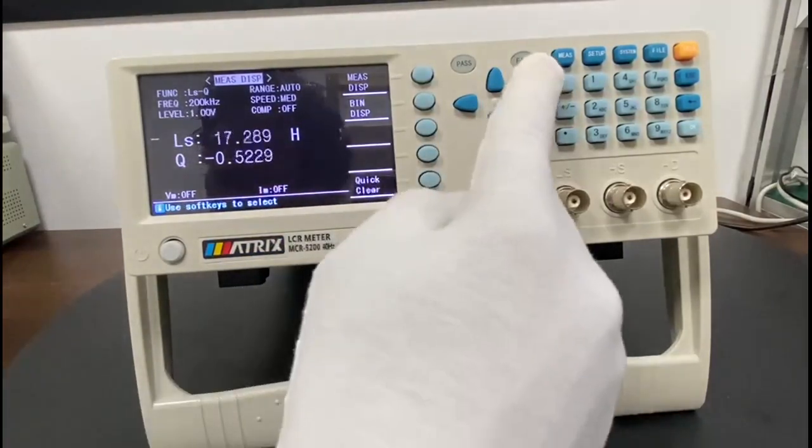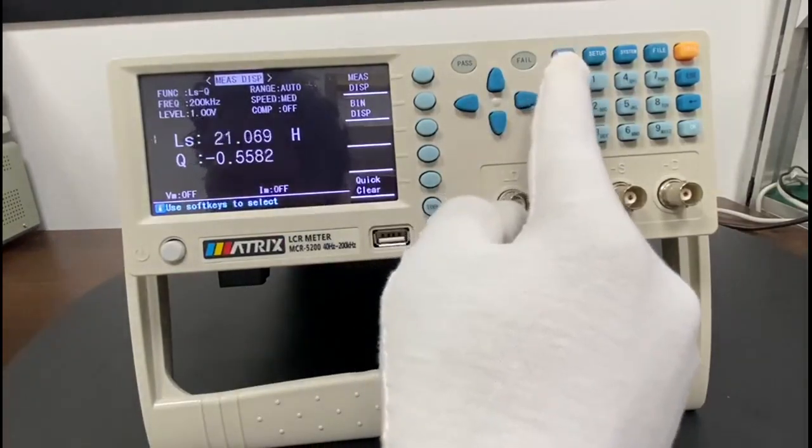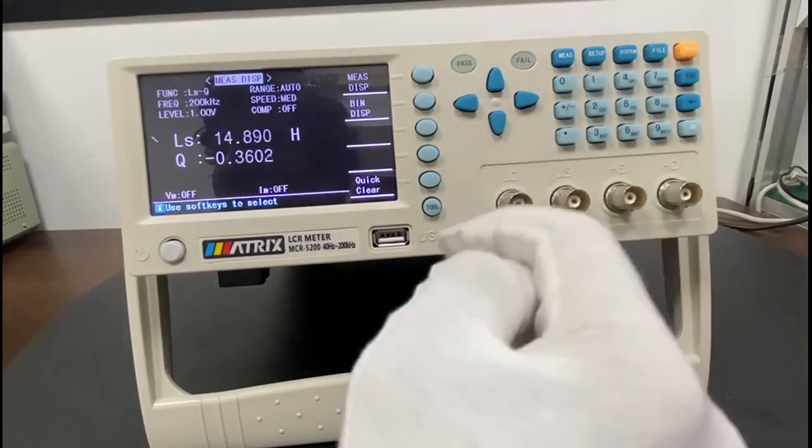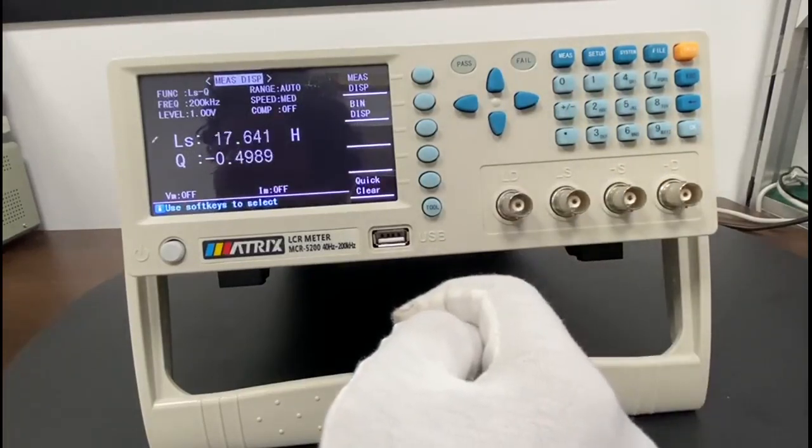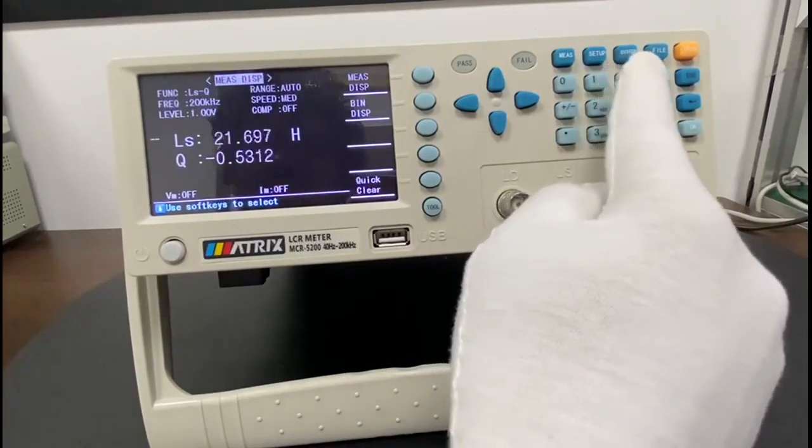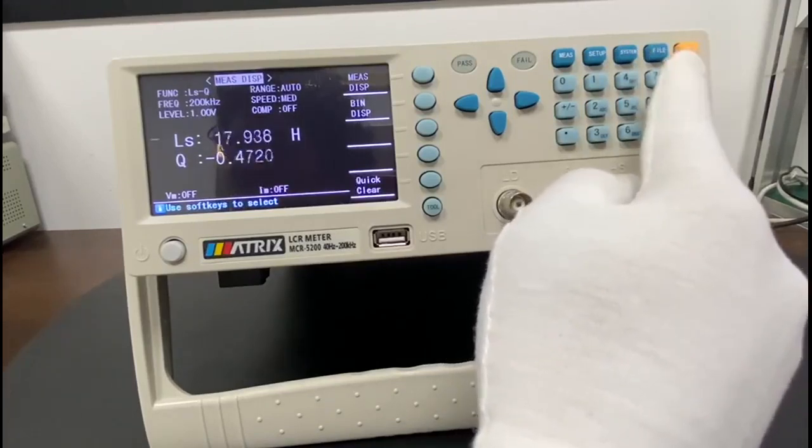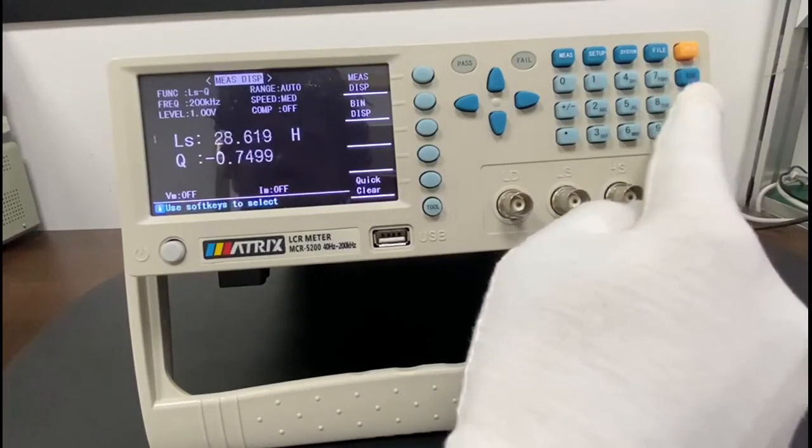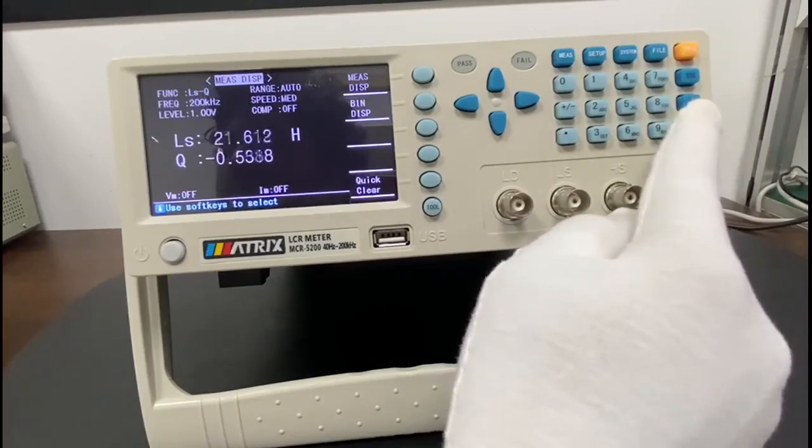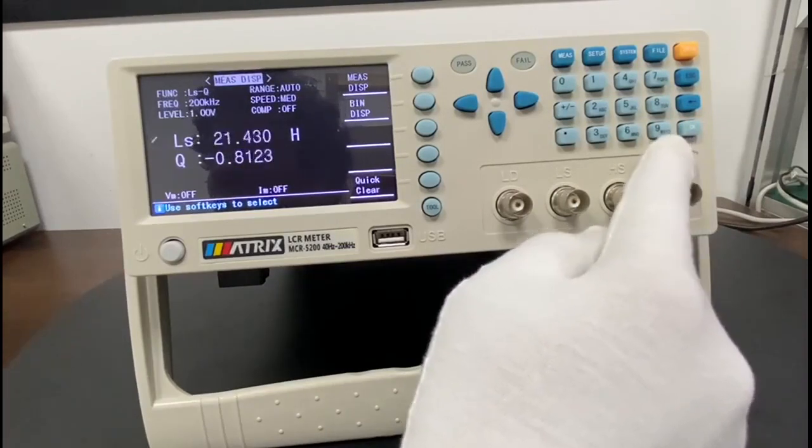Here's the measurement button which is the measurement display page shortcut key, the setup key for measurement set page, the system setting page shortcut key, and here is the file management page shortcut key. Here is the trigger measure key and here is the cancellation key escape. Here is the backspace key used to delete the previous input and here is the OK button to confirm input.